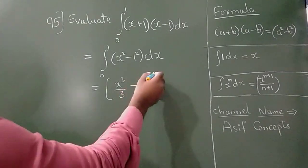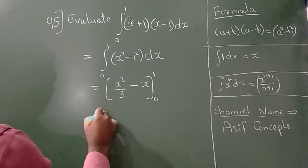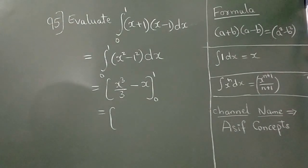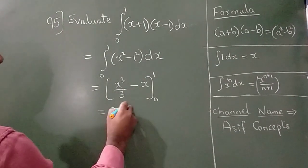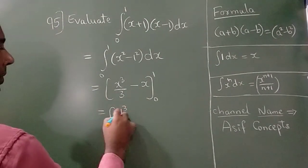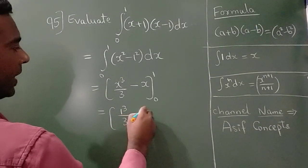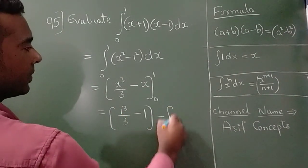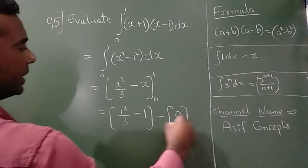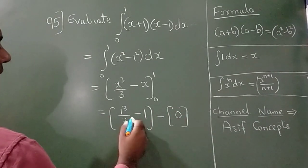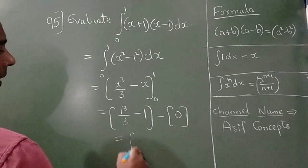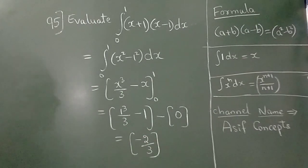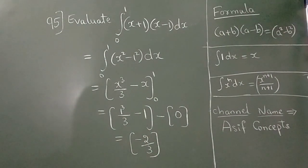Now apply the limit. The upper limit gives 1³/3 − 1, and the lower limit becomes 0. Taking the LCM, you get the answer as −2/3.